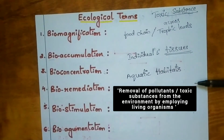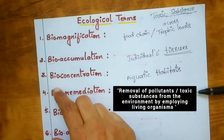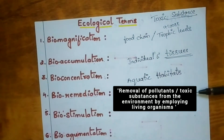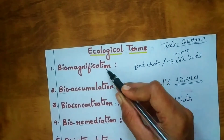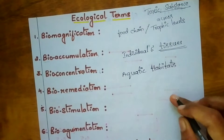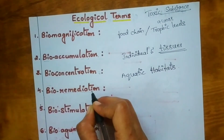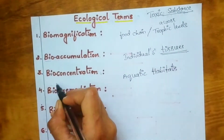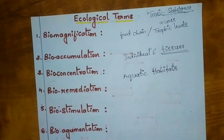The next term is bioremediation. Bio means living, and remediation means finding a solution. Bioremediation is the removal of pollutants or toxic substances from the environment by employing living organisms. A simple definition: environmental cleanup by organisms is called bioremediation.